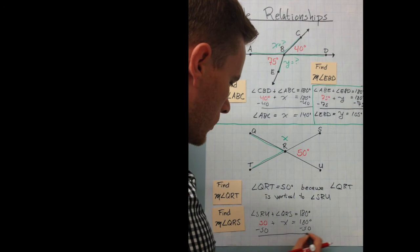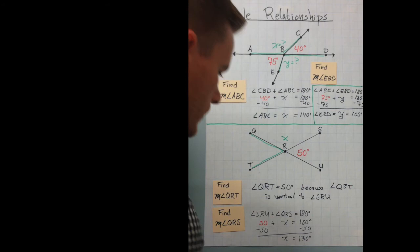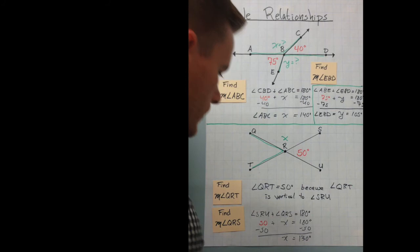So 180 minus 50 is 130 degrees. And again, to be precise, it's QRS is what equals 130 degrees. So angle QRS, which we called X, equals 130 degrees. All right. Good job. All right.